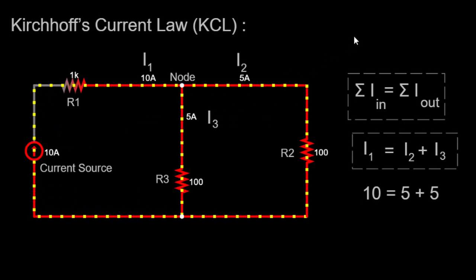KCL specifically states that the algebraic sum of currents entering and exiting a node in an electrical circuit is always zero.